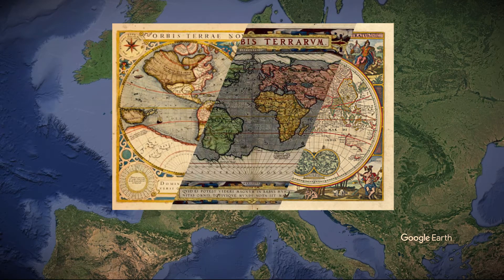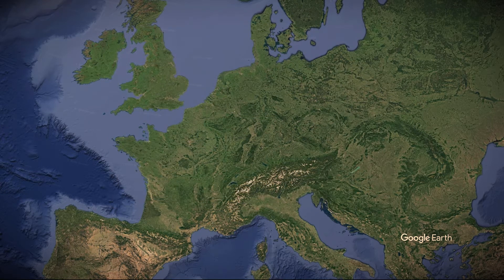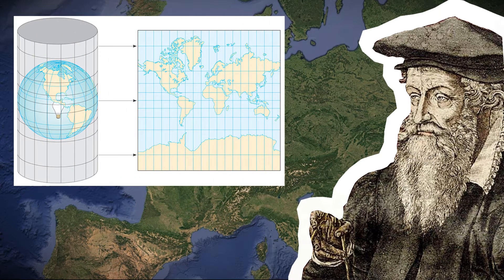Looking into old maps, we can see the inconsistencies present in every single one of them, but there was no defined projection, at least until Gerard Mercator, a Flemish geographer and cartographer, came with the idea of a cylindrical representation of the Earth. As you can see in this picture I'm showing to you.